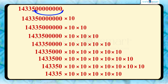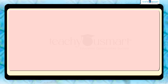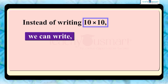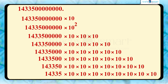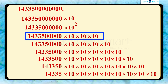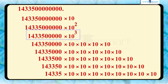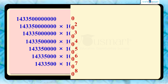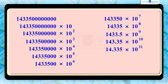This repeated multiplication by 10 is difficult to write and read. To avoid this difficulty, we can use exponents. Instead of writing 10 multiplied by 10, we can write 10 raised to 2. Then 10 multiplied by 10 multiplied by 10 can be represented as 10 raised to 3. We can continue like this until there is only one digit to the left of the decimal point.